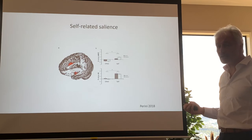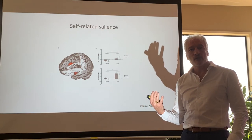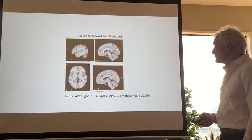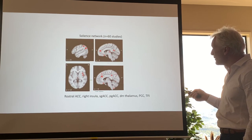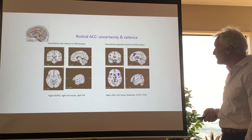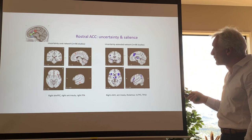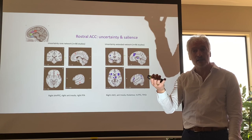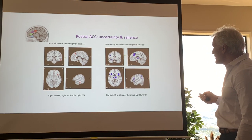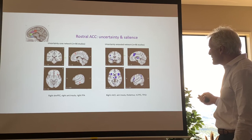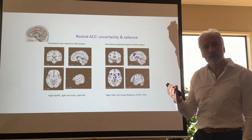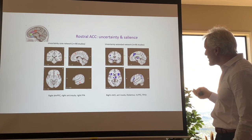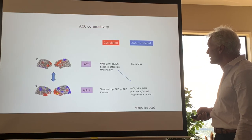Self-related salience involves the rostral anterior cingulate and anterior insula. Salience by definition — behavioral relevance — has to be related to the self. The salience network also involves the habenula and posterior cingulate, which link to self-reference. What is important depends on what is uncertain or changing in the environment. A meta-analytic approach looking at what is associated with uncertainty — beyond what is specific for it — finds that activation extends not just into the dorsal medial prefrontal cortex but also into the rostral anterior cingulate.